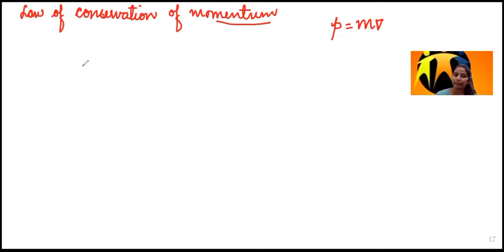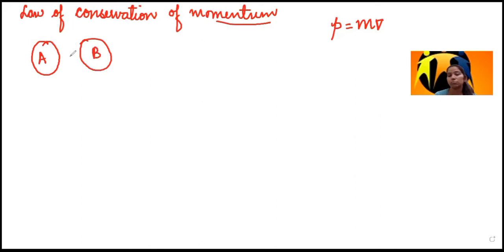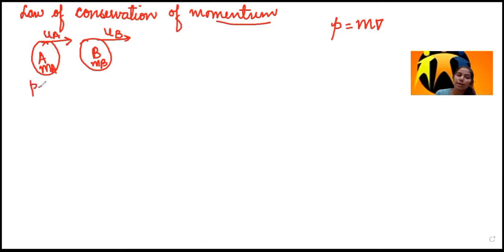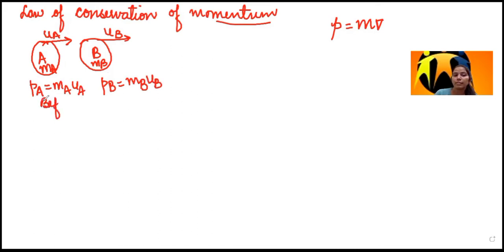When two bodies are interacting, say body A and body B — body A is moving with initial velocity u_A and has mass m_A, and body B is moving with initial velocity u_B and has mass m_B. The momentum of body A is p_A = m_A × u_A, and the momentum of body B is p_B = m_B × u_B. This is the case before collision.